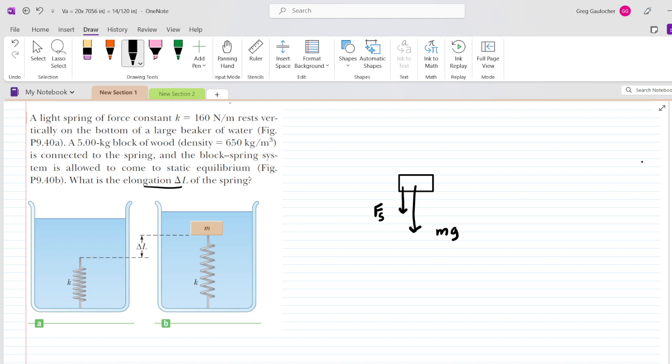In addition, because this mass is submerged in a fluid, there's going to be an upward buoyant force acting on it. And so we're going to draw an upward force and label that B for buoyant force. Now, this mass is in equilibrium, which means that the net force or the sum of the forces acting on it must equal zero.